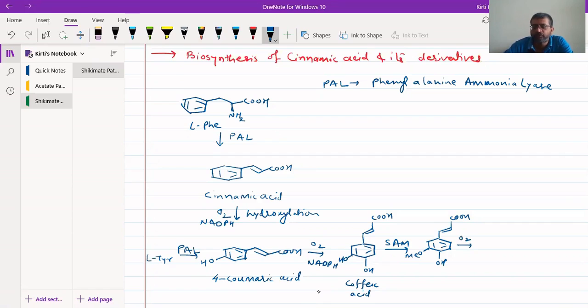Further, it will be oxidized in presence of NADPH. NADPH and NADPH are reducing agents. They will reduce this O2 to OH and we will get another OH being added. This compound that we have got is ferulic acid. Then from ferulic acid, another hydroxylation happens.